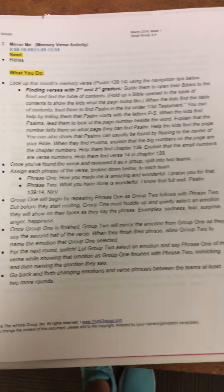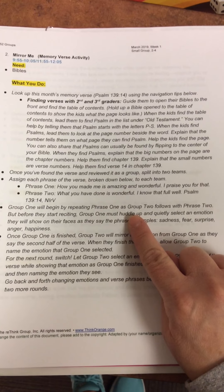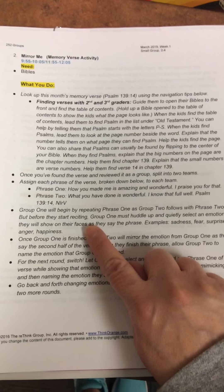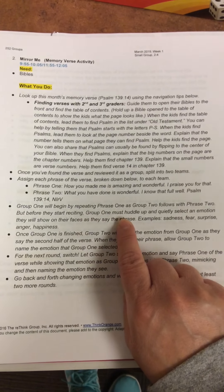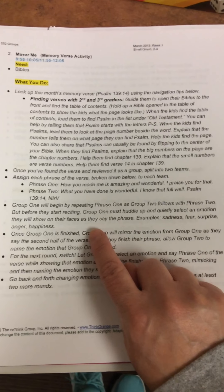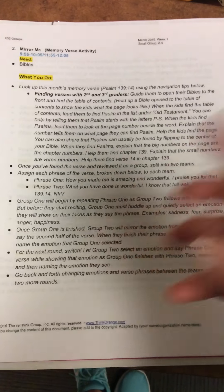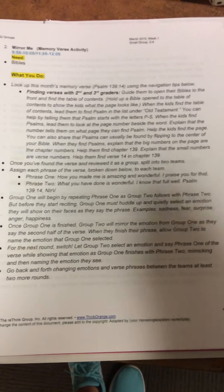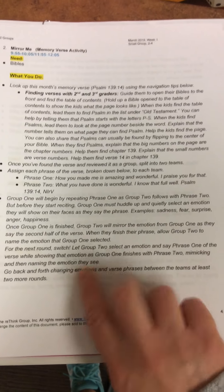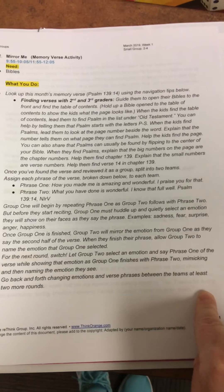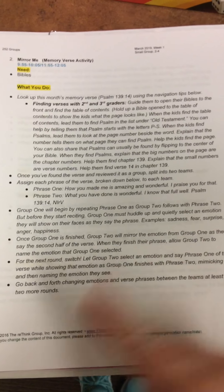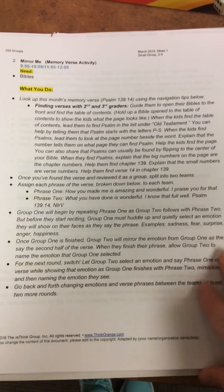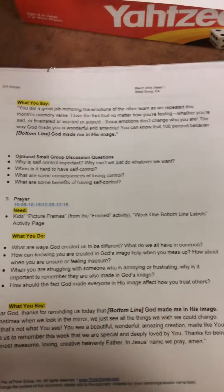Group one begins by repeating phrase one as group two follows with phrase two. But before they start reciting, group one has to huddle up and quietly select an emotion to show on their face — so they'll all be sad, scared, or happy. Then once they're finished, group two is going to mirror that emotion. For the next round, switch: group two selects an emotion and says the first phrase, and group one mirrors and says the second phrase. Go back and forth, changing emotions as they say the memory verse.